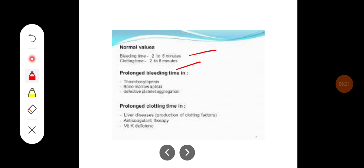Bleeding time is prolonged in cases of thrombocytopenia, where the number of platelets reduces, or in bone marrow diseases where platelet count is reduced, and in defective platelet aggregation where the function of platelets is affected.